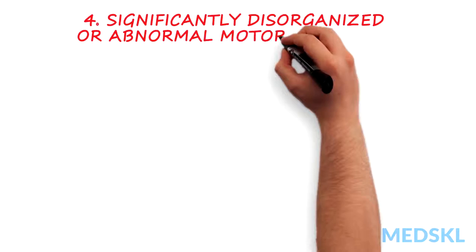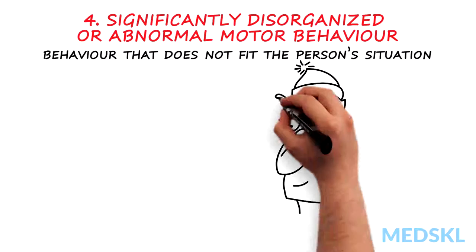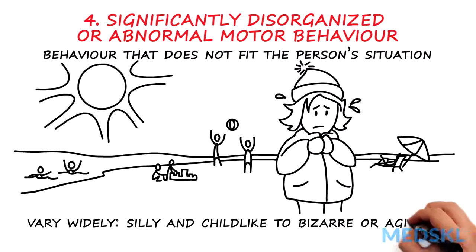4. Significantly disorganized or abnormal motor behavior. You can think of this as any behavior that doesn't fit the person's situation. The types of behavior you might see can vary widely, from silly and childlike to bizarre or agitated. For example, the person may dress in an odd manner or not attend to their hygiene.